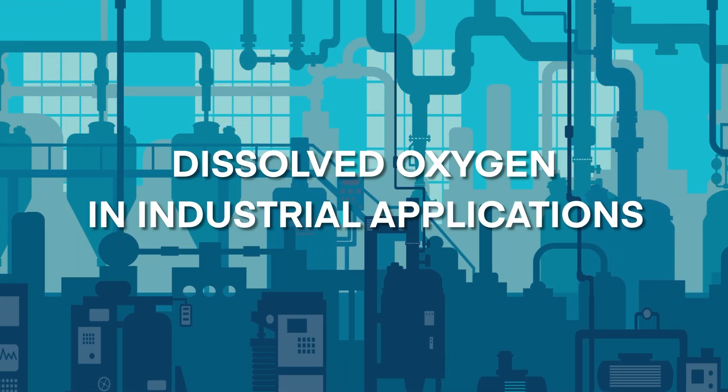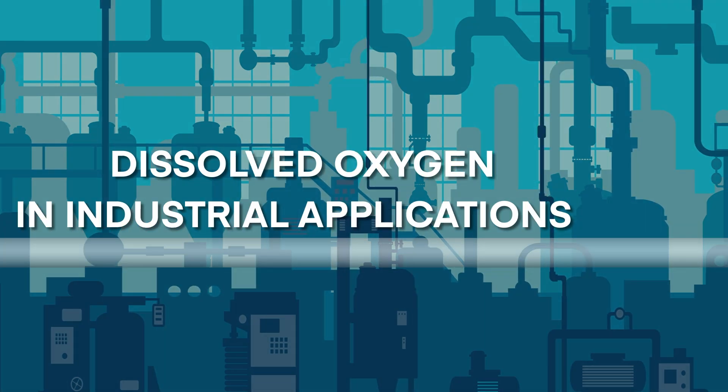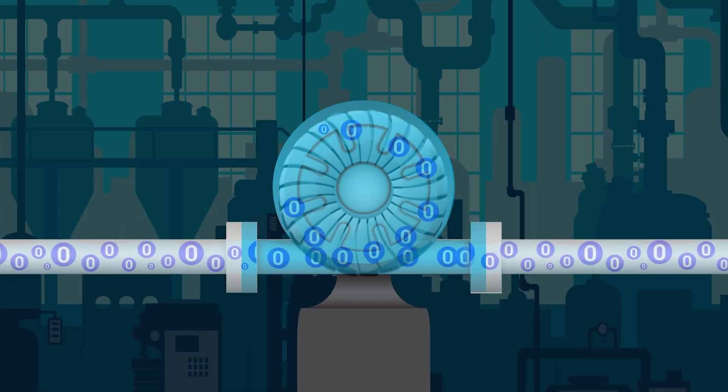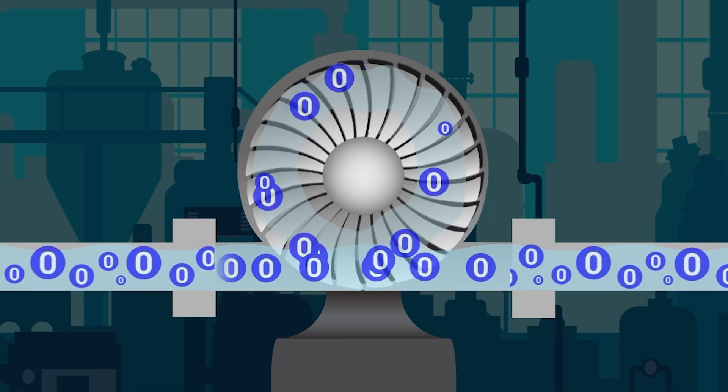Higher dissolved oxygen levels aren't always a good thing. In many industrial processes involving metal components or pipelines, controlling dissolved oxygen levels can help prevent corrosion.